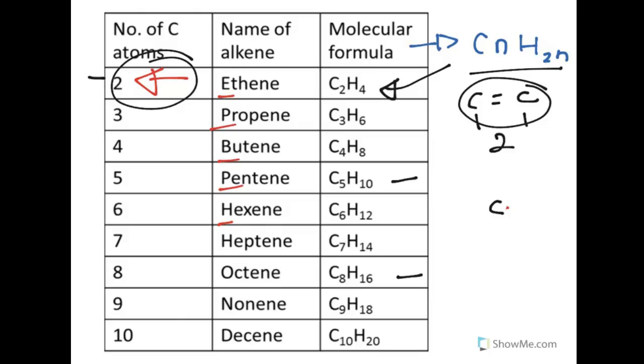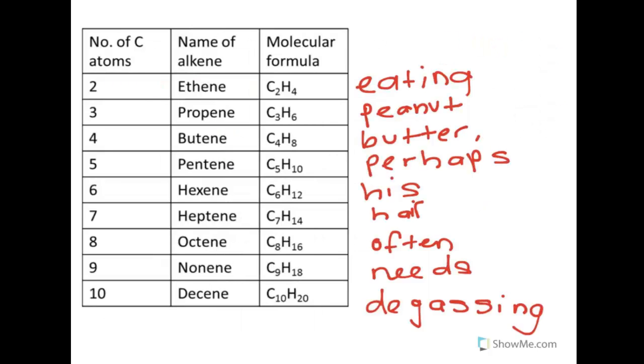So, as you guys can see, it's kind of a lot, kind of overwhelming. So, I'm going to teach you guys a way to memorize this easily. This is my way. The thing that differentiates the name of alkenes is usually the starting part of every word. So, here's one way: eating peanut butter, perhaps, he said, often needs degassing. So, the way to say this: eating peanut butter, perhaps, he said, often needs degassing. That's the expression. Or, if you don't want to memorize this, you can just remember, it's October, November, December. Eating peanut butter, perhaps, his hair, October, November, December. That's basically the easiest I could come up with. So, there you go guys. That's the way for you to memorize alkenes.